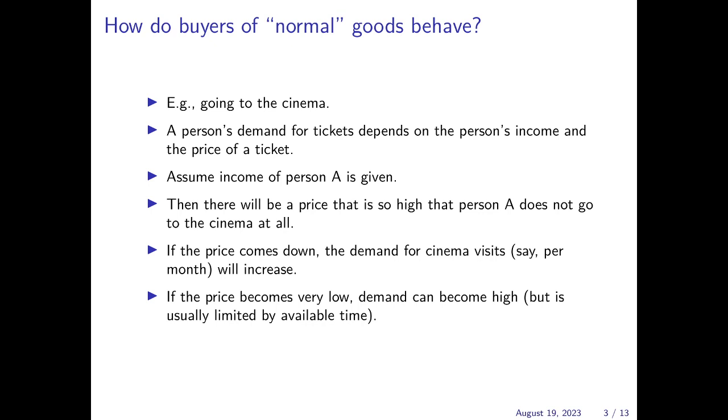Assume for the moment that the income level of person A is given, and then it's easy to imagine that there can always be a price of the ticket that is so high that this person would not want to go to the cinema at all per month. So assume this is a student with a low income level, and the price of a ticket is very high for some reason. Then, of course, the person would typically not want to go to the cinema at all.